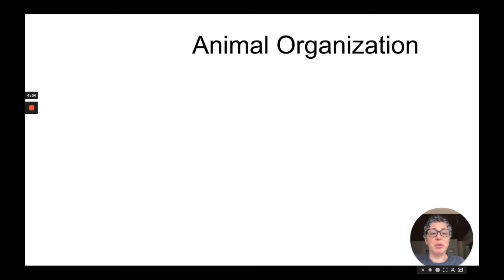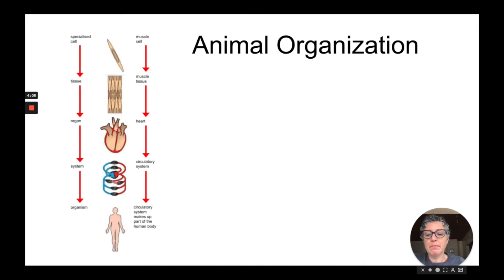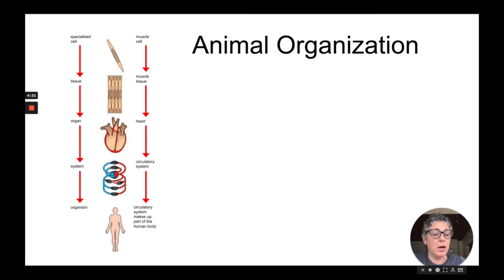Now let's look at animal organization. Starting with specialized cells — in this case, a muscle cell — groups of those muscle cells become muscle tissue. Different types of tissue will then form the heart, which is the organ, which is part of the circulatory system. The circulatory system makes up one of the systems in an organism like a human.